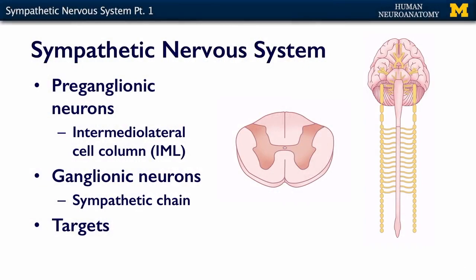The Sympathetic Nervous System is a two-neuron chain that operates and has targets all over the body. The preganglionic neurons live in the intermedial lateral cell column. We introduced that when we talked about the spinal cord, and it's this little cluster of neurons that lives right here on either side of the cord.